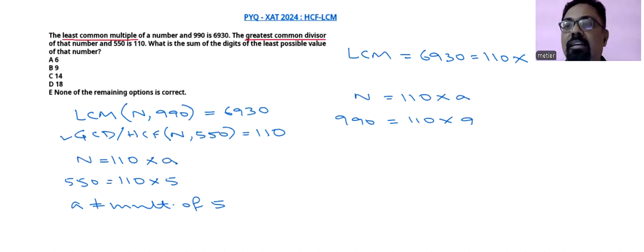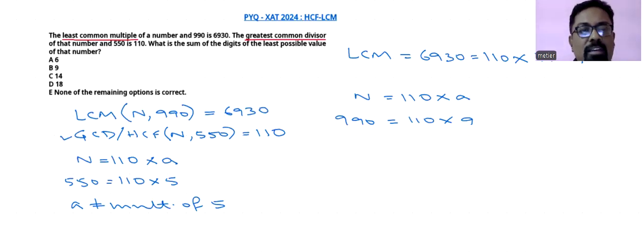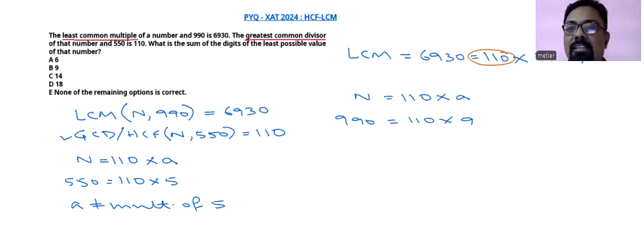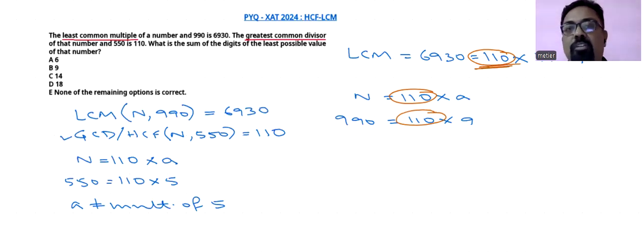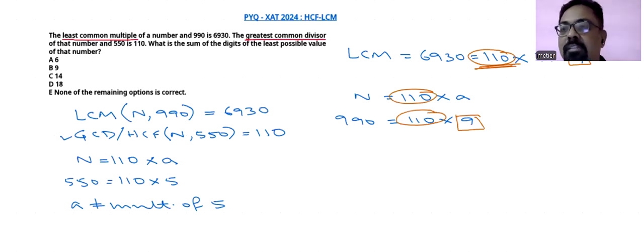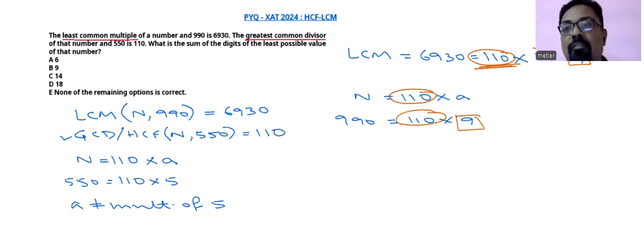So 6930 = 110 × 7 × 9. Both numbers have 110 as a common factor, so 110 is already in the LCM. The second number 990 = 110 × 9 contributes the factor 9. But we also have 7 in our LCM which is not coming from 990, so this factor 7 must come from n. Therefore a must be a multiple of 7.